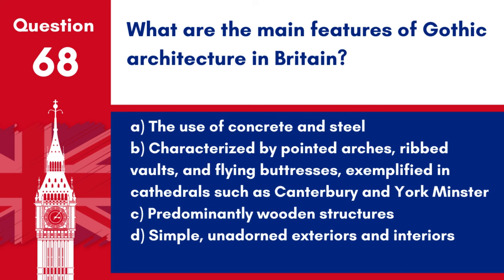Question 68: What are the main features of Gothic architecture in Britain? a. The use of concrete and steel. b. Characterized by pointed arches, ribbed vaults and flying buttresses, exemplified in cathedrals such as Canterbury and York Minster. c. Predominantly wooden structures. d. Simple, unadorned exteriors and interiors. Answer: b. Gothic architecture is noted for its height, intricacy and beauty, representing a high point in medieval British architecture.